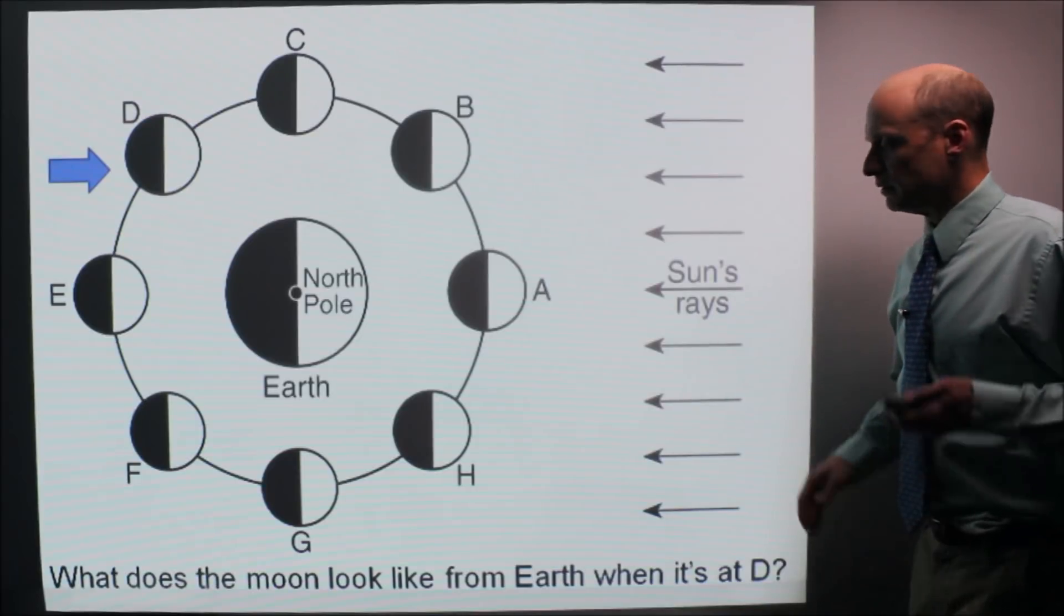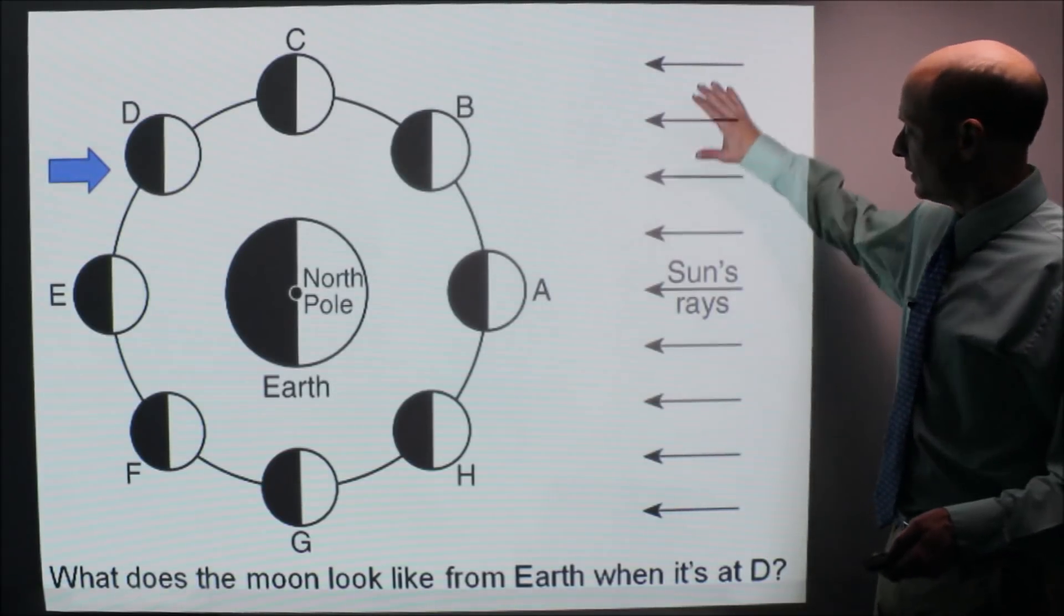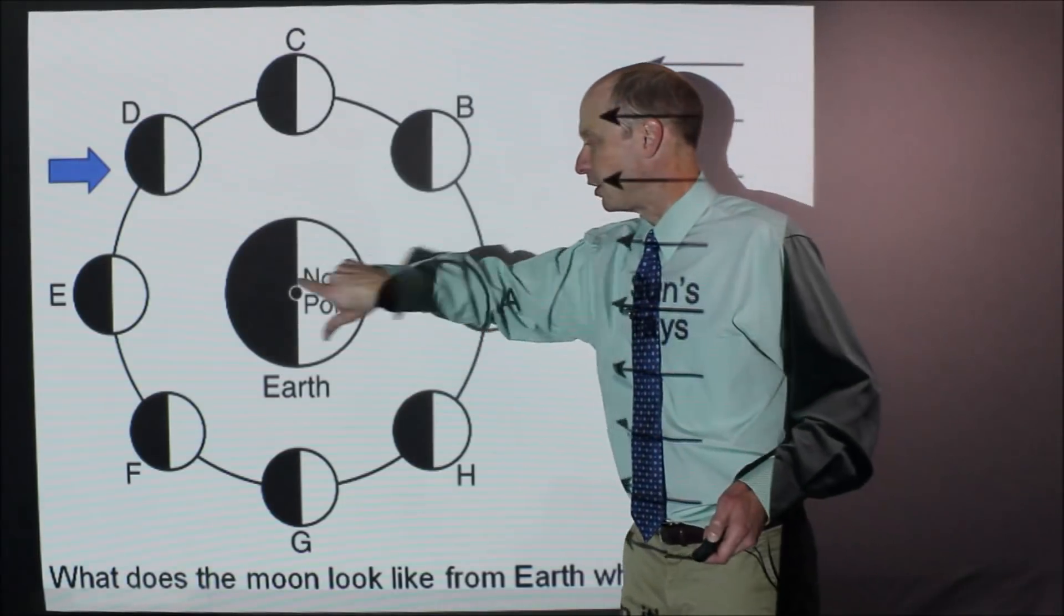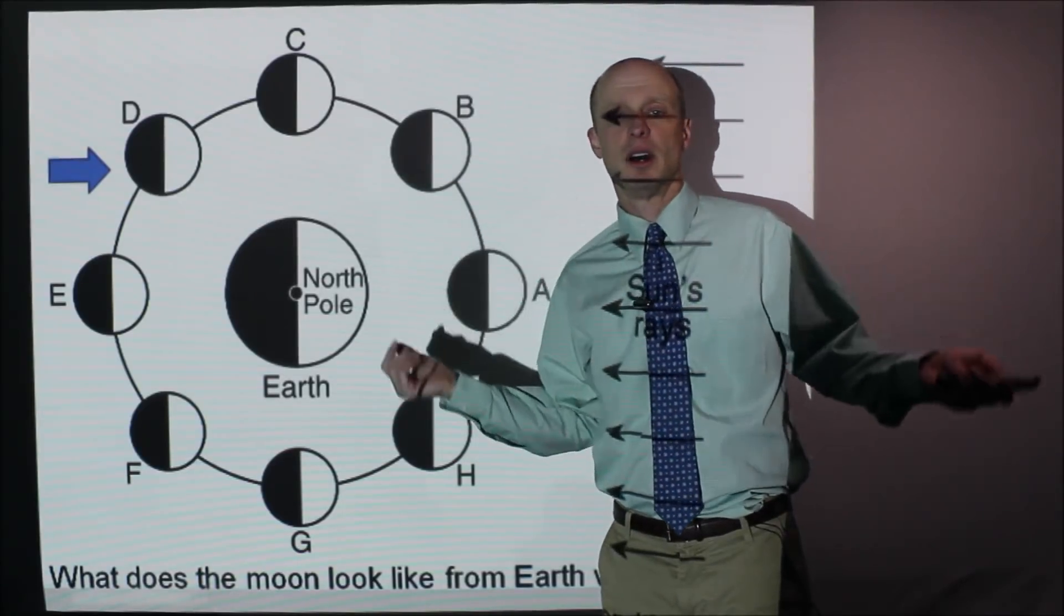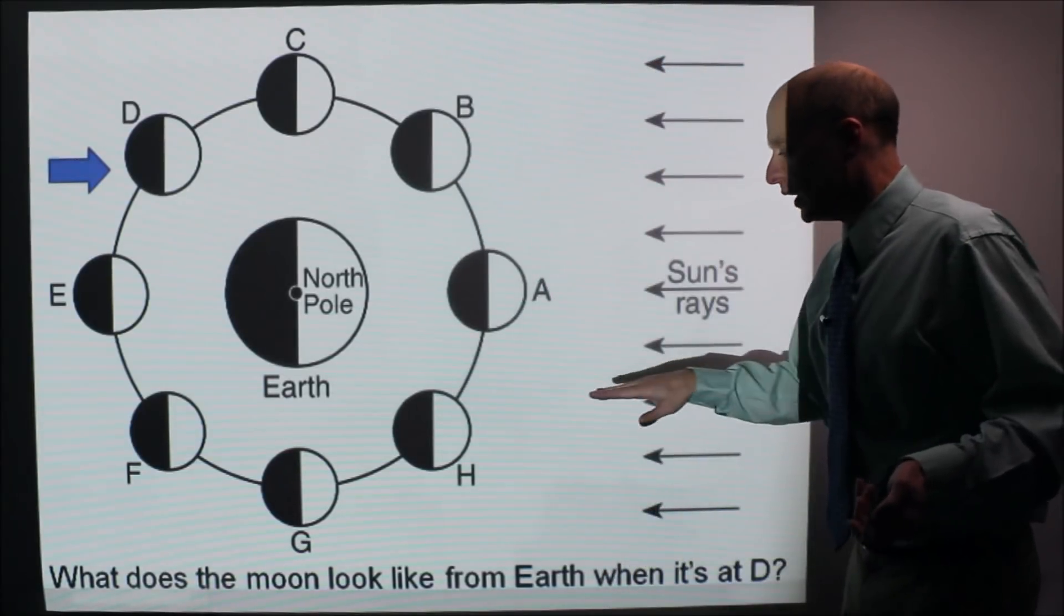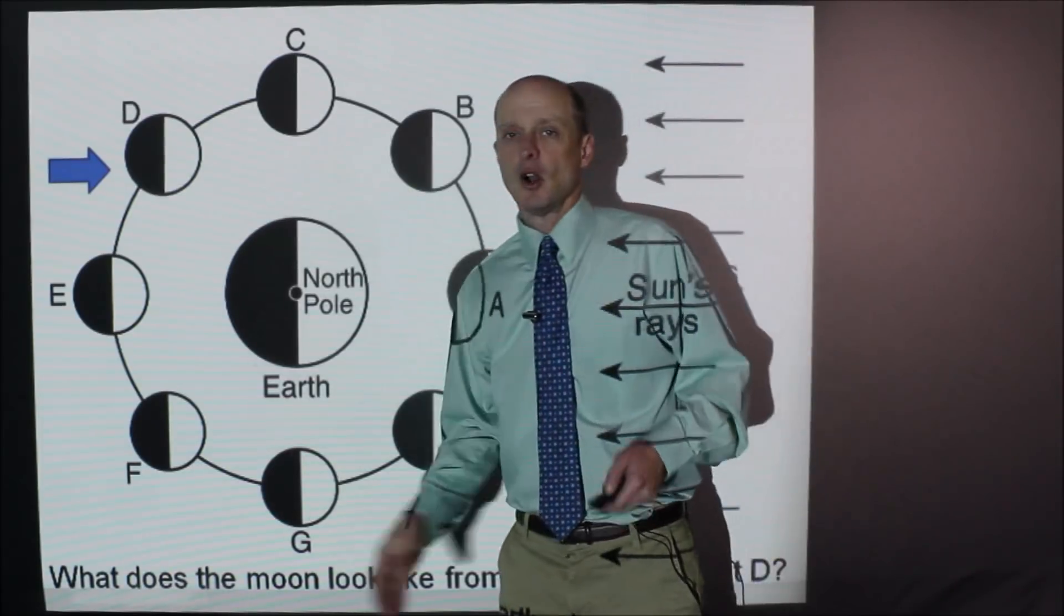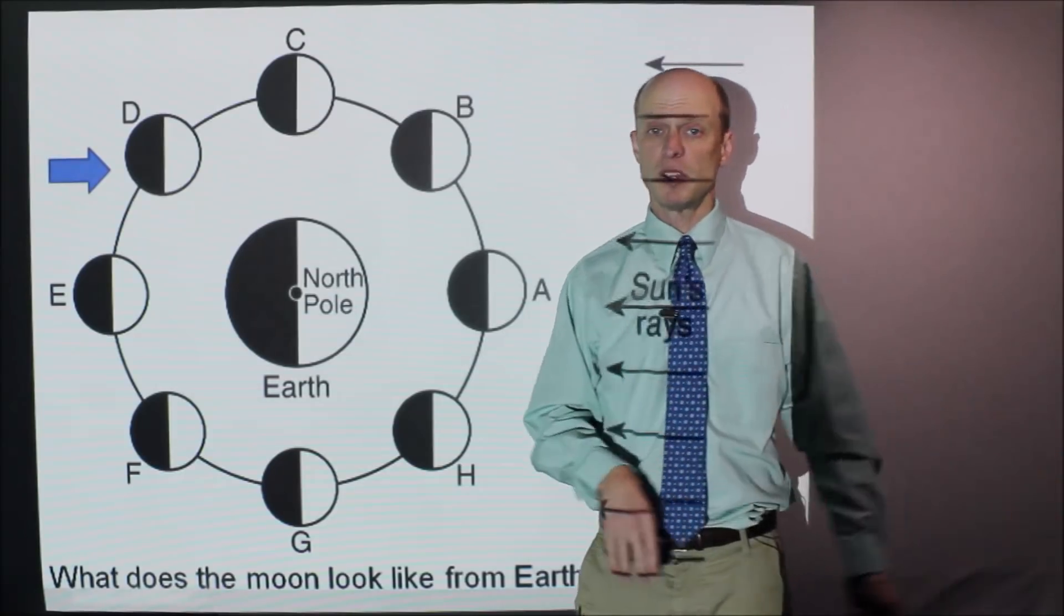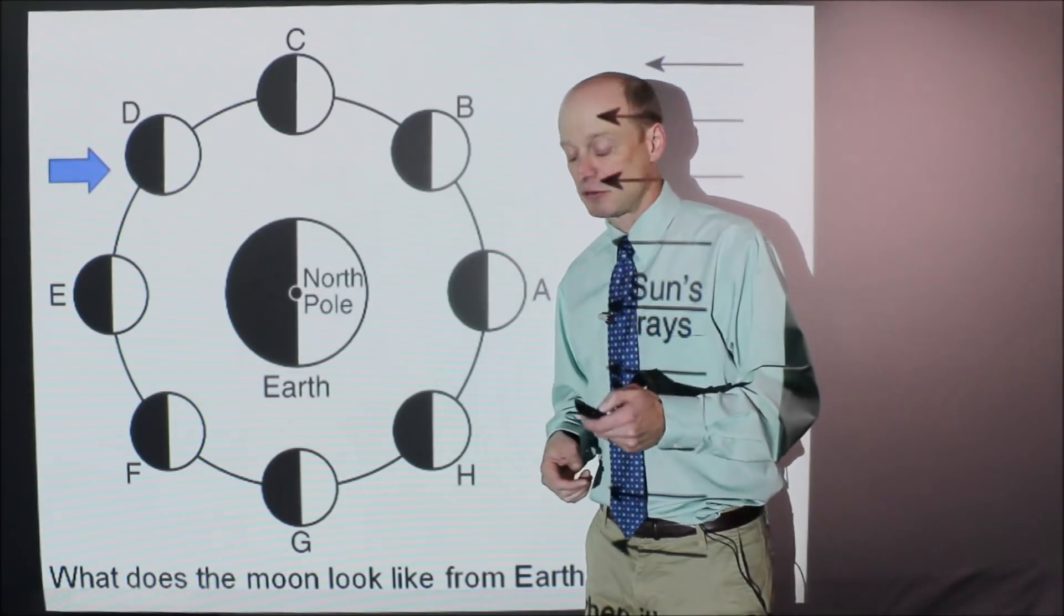This is what you often get and what stuff you need to know how to do. Here we have sun's rays coming this way. We're looking down at Earth on the North Pole, and you see the moon at different positions during a month. What does the moon look like from Earth when it's at location D? Sometimes it's multiple choice. It could be draw it in. Being able to understand it and do it is really important.